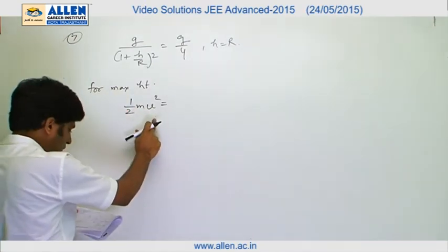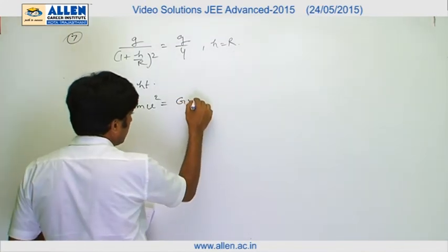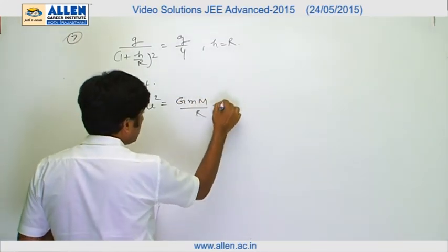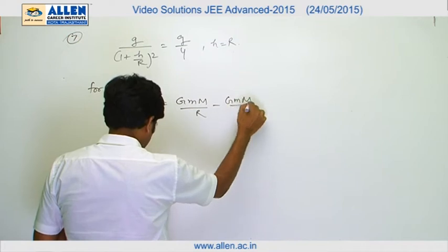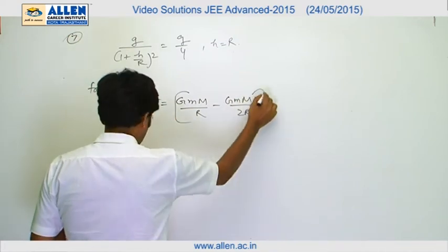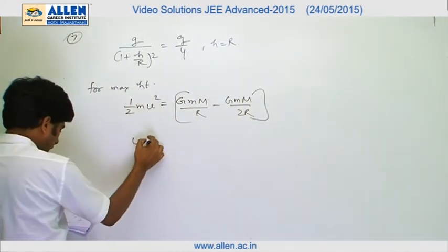Therefore, change in kinetic energy will be equal to change in potential energy, that is GMm/r minus GMm/2r. From this equation we get the value of v, that is √(GM/r).